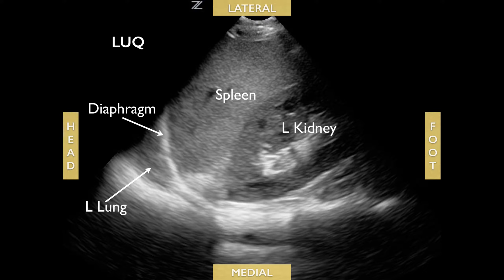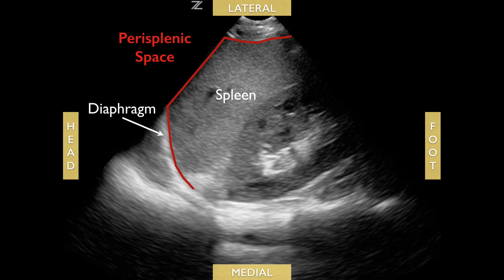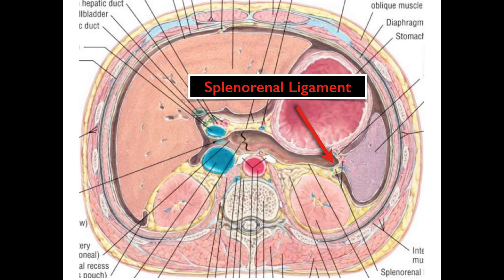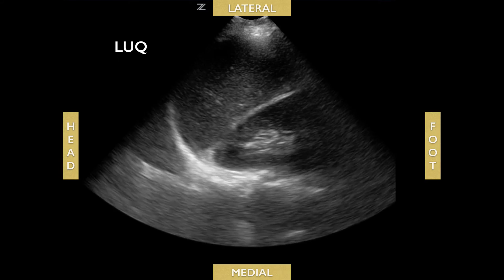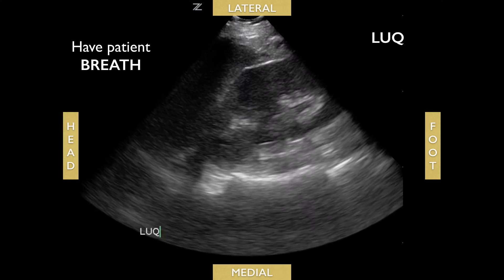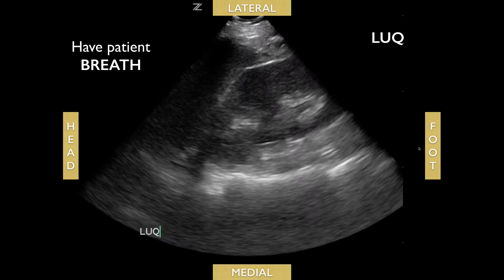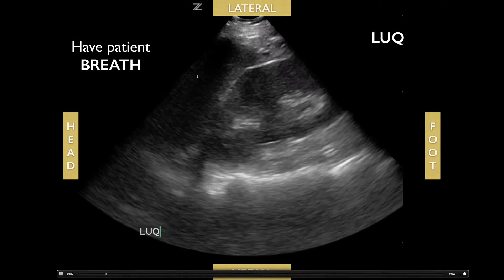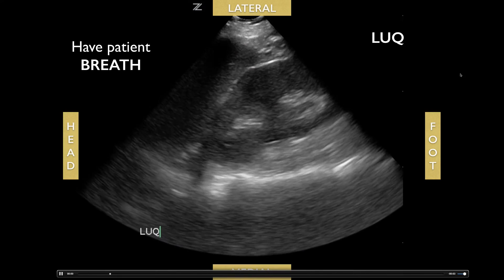For the left upper quadrant view, similar to the liver view, you'll see the left lung superiorly, then the diaphragm, then the spleen, and then the left kidney. Importantly, fluid tracks around the perisplenic space and not between the spleen and kidney, because there's a splenorenal ligament between them. If you have rib obstruction, have the patient breathe in to improve the view.